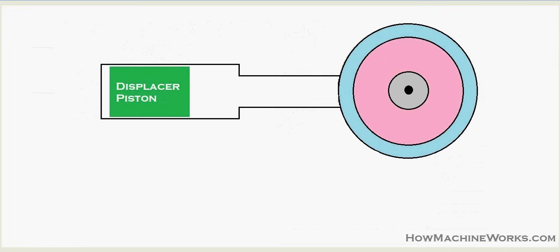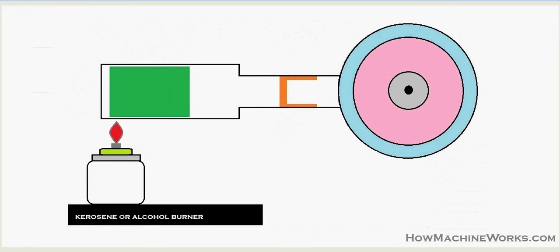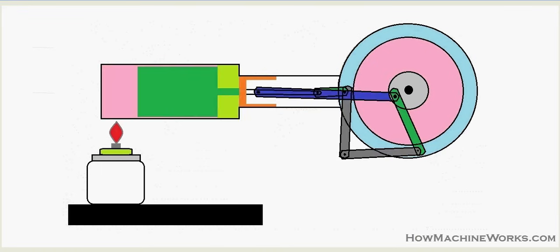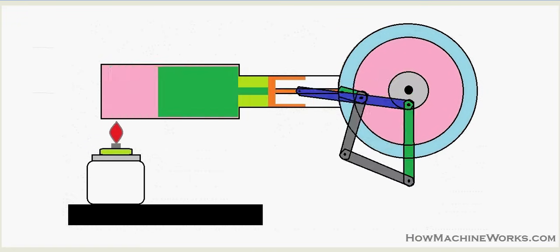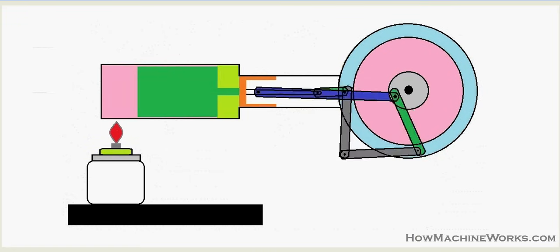There are two pistons here: one is the displacer piston, which is in green, and then we have the power piston, which is in orange. We also have a kerosene or alcohol burner, which is used to heat the air inside the engine. There are also links connected to both the displacer piston and the power piston, which connect towards the disc — that's the flywheel.